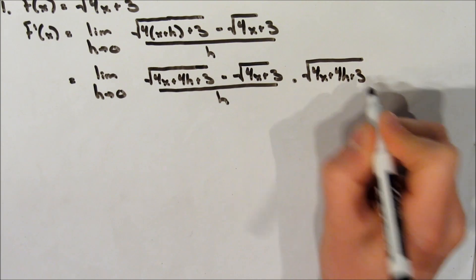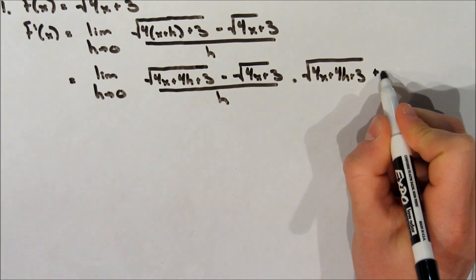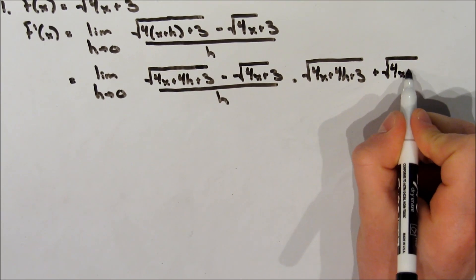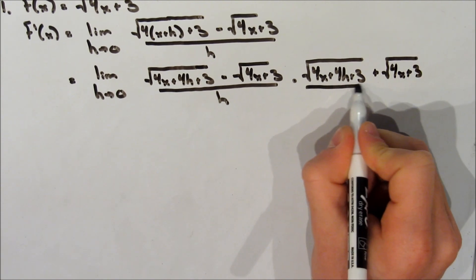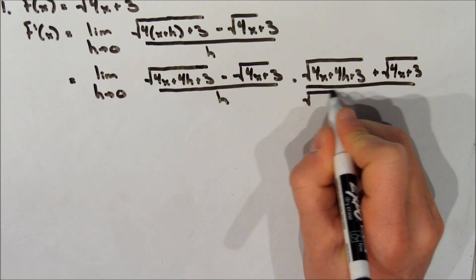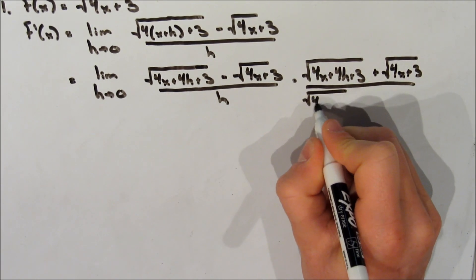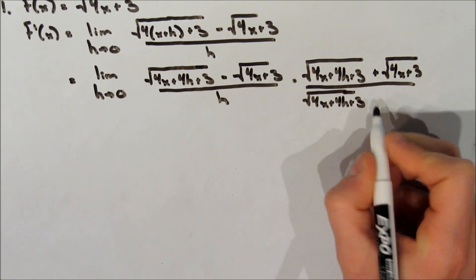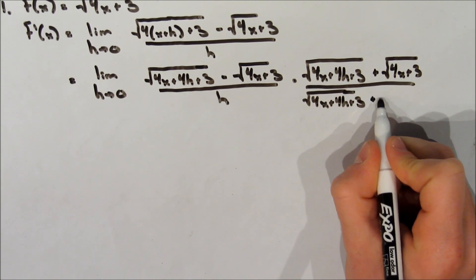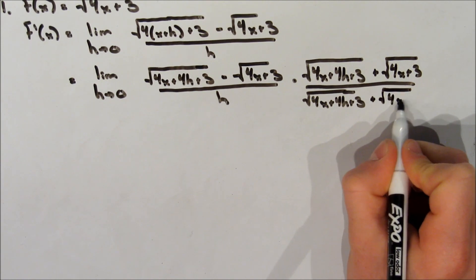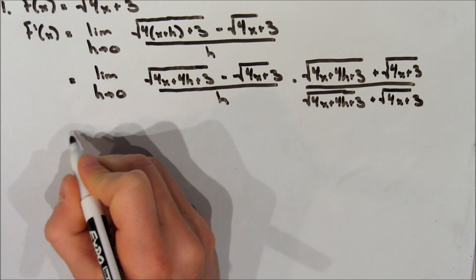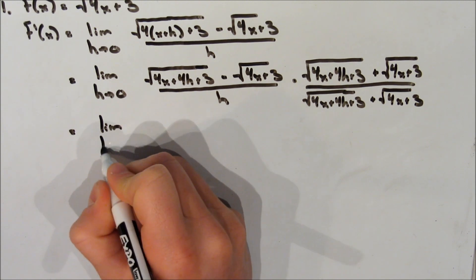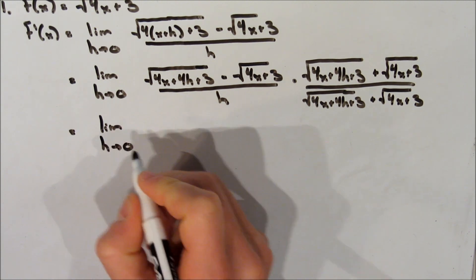We're going to multiply by the square root of 4x plus 4h plus 3 plus the square root of 4x plus 3, all over that same expression. When we multiply all of this out, some terms should cancel.